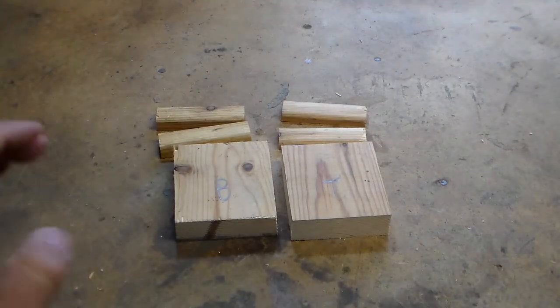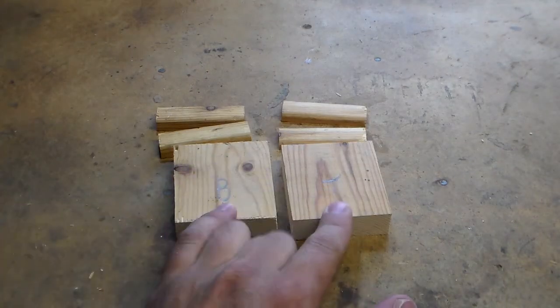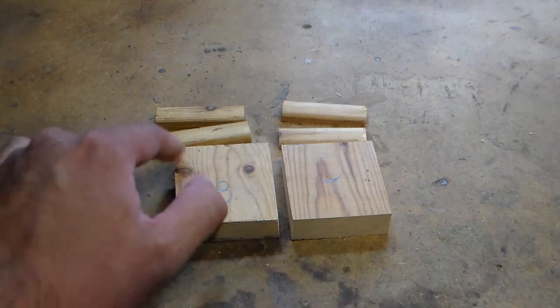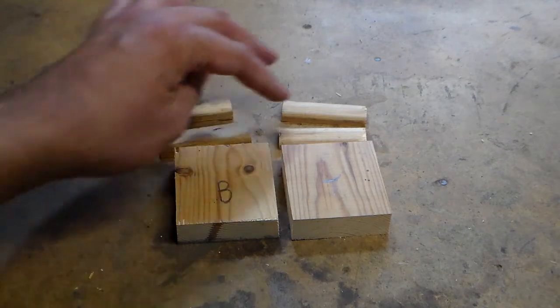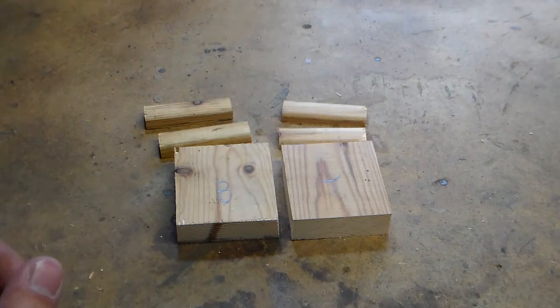The first thing I did was to cut my wood to size. Both of these blocks are roughly 2 1/2 inches wide by 3 inches long. And then, these are around a quarter of an inch, you'll see that the one set is thicker than the other. That's just kind of how it turned out.